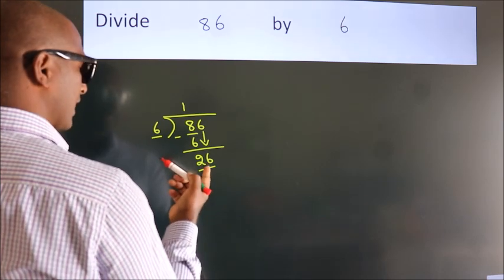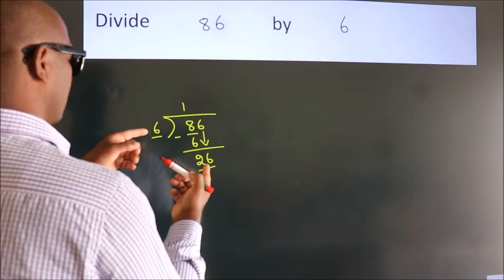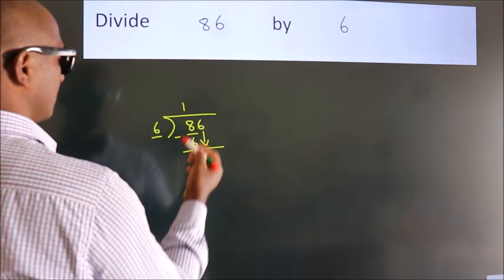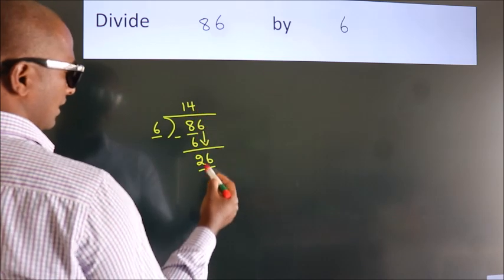26. A number close to 26 in the 6 table is 6 times 4, which is 24.